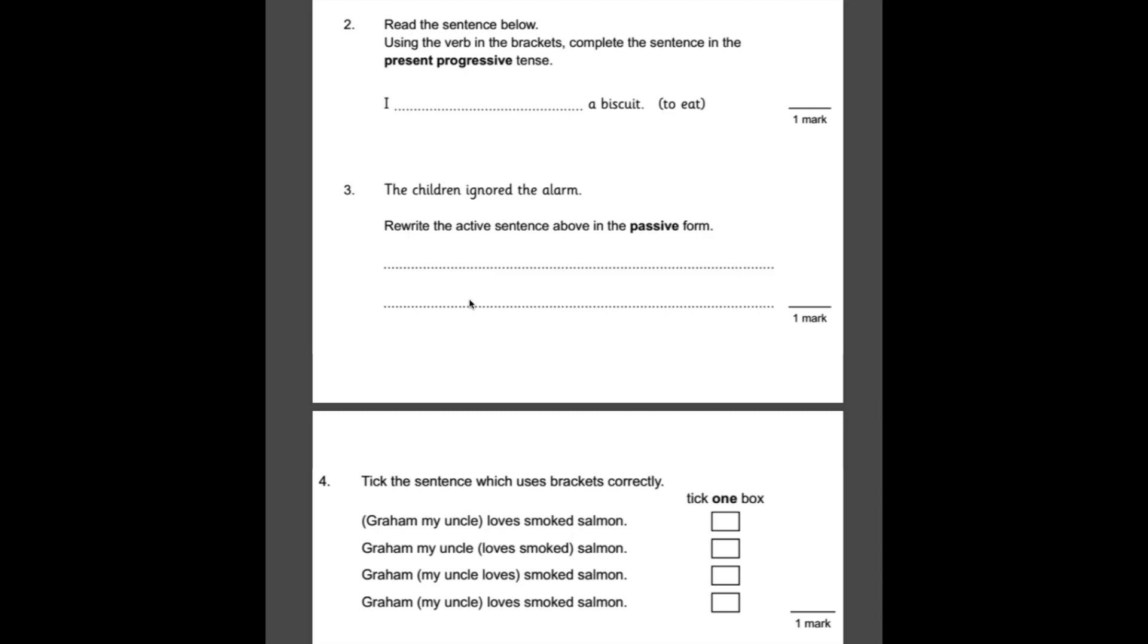Number two, read the sentence below. Using the verb in brackets, complete the sentence in the present progressive tense. An easy way to remember the present progressive is it tends to be am then with the verb ing. So in this case, we have eat, so it would be I am eating. I am eating a biscuit.